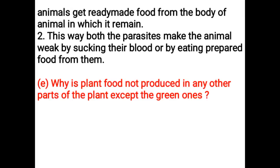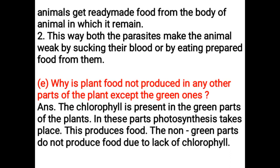Why is plant food not produced in any other parts of the plant except the green ones? Chlorophyll is present in the green parts of the plants. In these parts, photosynthesis takes place and this produces food. The non-green parts do not produce food due to lack of chlorophyll.